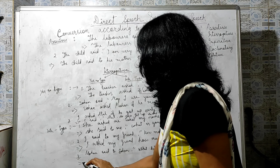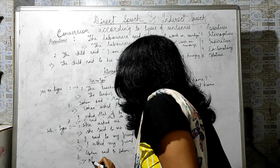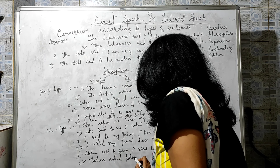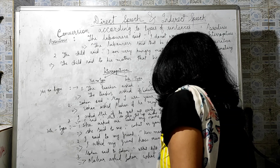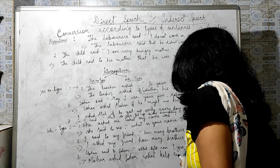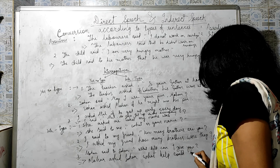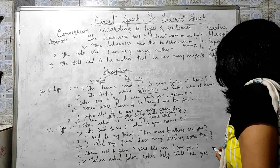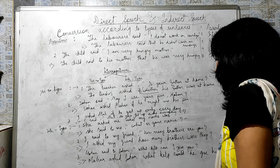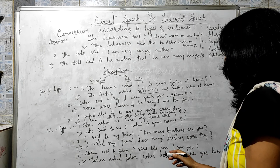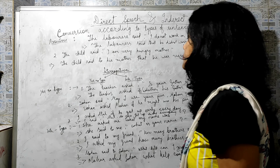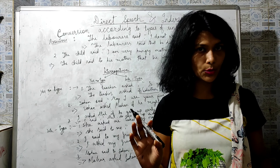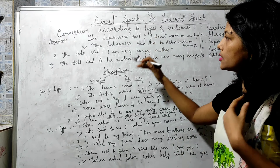Example: 'Mohan said to Sohan, what help can I give you?' becomes 'Mohan asked Sohan what help he could give him.' 'Can' turns to 'could' and pronouns change accordingly. At the end of indirect speech for WH-type questions, no question mark is needed.